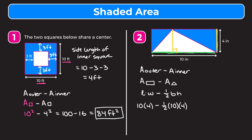Now we simplify: 10 times 4 is 40, minus one half times 10 times 4 which gives us 20, and 40 minus 20 is 20 inches squared as our shaded area.